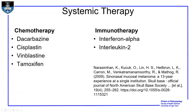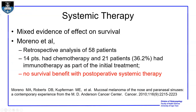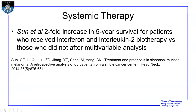In terms of systemic therapy — divided into chemotherapy and immunotherapy — chemotherapy includes drugs such as dacarbazine, cisplatin, vinblastine, and tamoxifen. Immunotherapy is mainly interferon alpha and interleukin-2. There is mixed evidence on the effect on survival. Moreno et al., in a retrospective analysis of 58 patients, found no survival benefit with post-operative systemic therapy. However, another study found a two-fold increase in five-year survival for patients who received interferon and interleukin-2 biotherapy versus those who did not, after multivariate analysis. The jury is still out on systemic therapy.